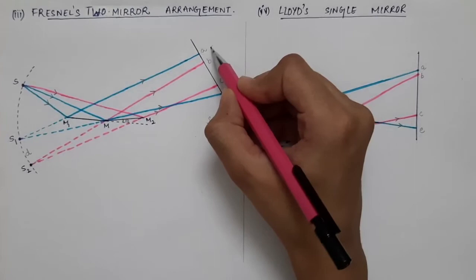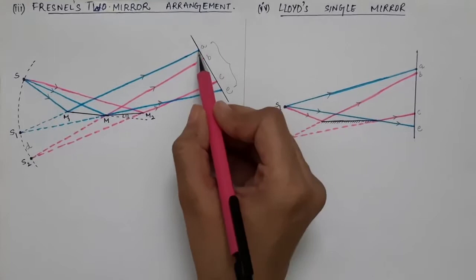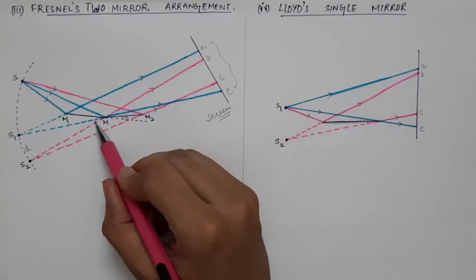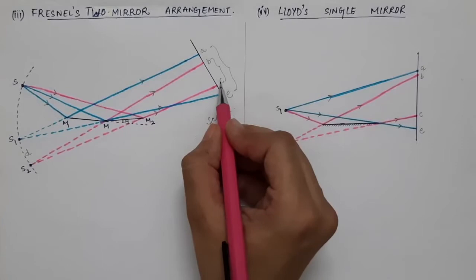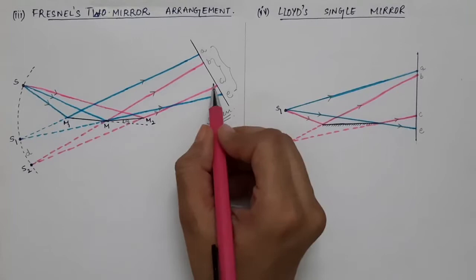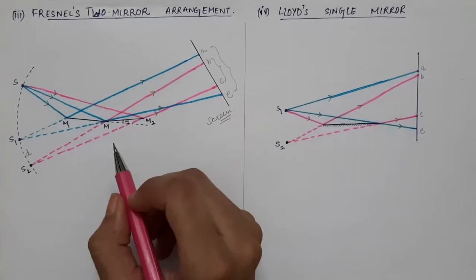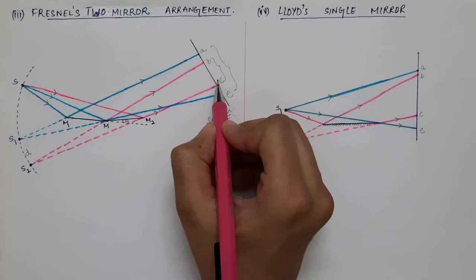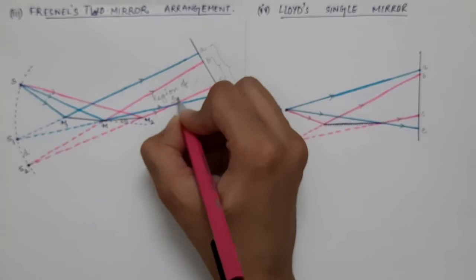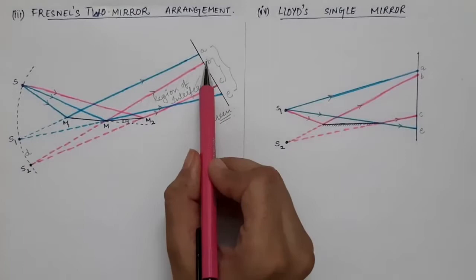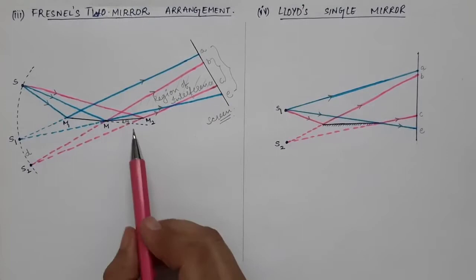The region from point A to point E on the screen is illuminated by the light reflected from the first mirror, which is the first wavefront. The region from point B to point C is illuminated by the light reflected from the second mirror, which is the second wavefront. These two wavefronts interfere with each other, and the common overlapping region is BC. So BC is the region of interference where the interference pattern is observed.